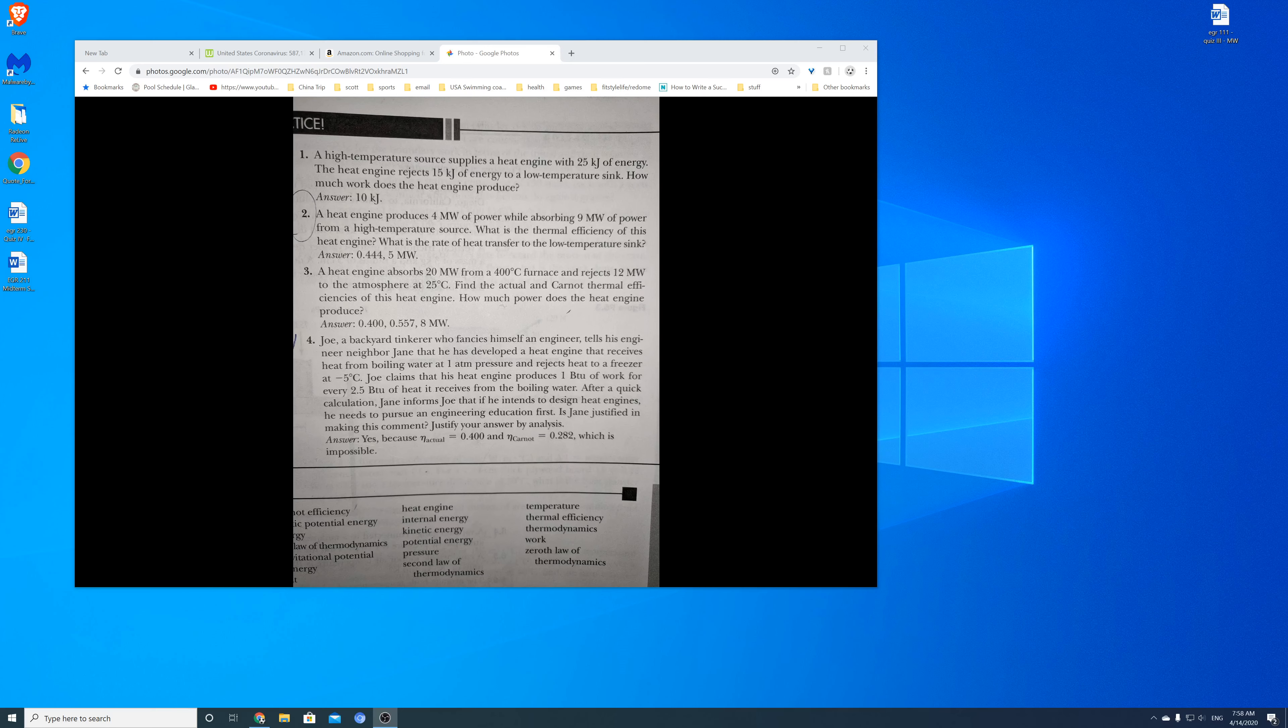Okay, I'm going to start with practice problem two on page 221. In this problem, you have a heat engine that produces four megawatts of power while absorbing nine megawatts of power from a high temperature source. We're going to look for the thermal efficiency of this heat engine and the rate of heat transfer to the low temperature sink.